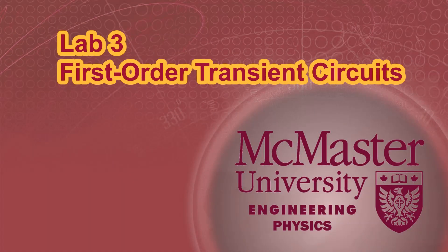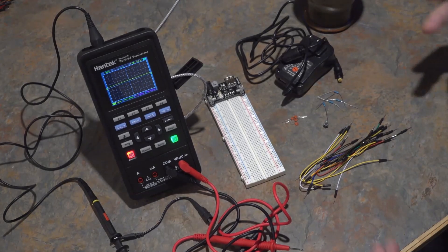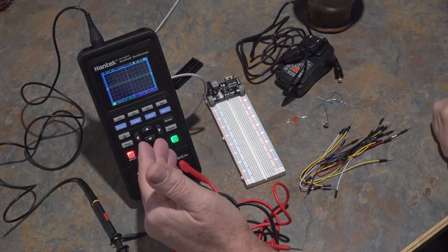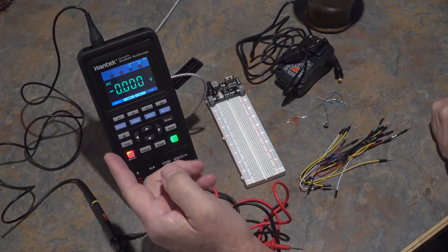Okay, hi everybody and welcome to Lab 3: First Order Transient Circuits, and welcome to my kitchen table again. This is the equipment that we'll be using - the Hantek oscilloscope. I'm only showing one probe but we're actually using two probes.